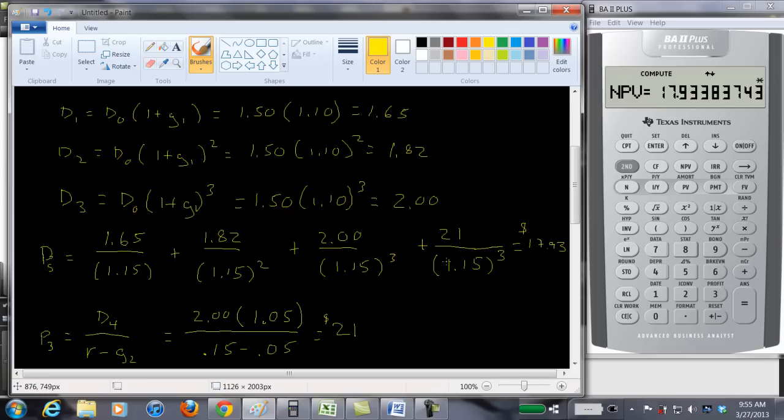This one accounts for all the other dividends. Here we have the first three dividends at the 10% rate, and this price of 21 accounts for all the dividends from year four to forever. And then don't forget to take the present value of that because we found the price in year three, which is the present value of all those dividends, but we have to take the present value. We have to bring it back to time period zero. That's why we're discounting by 1.15 to the third power.